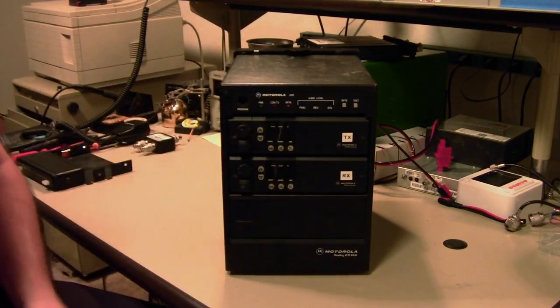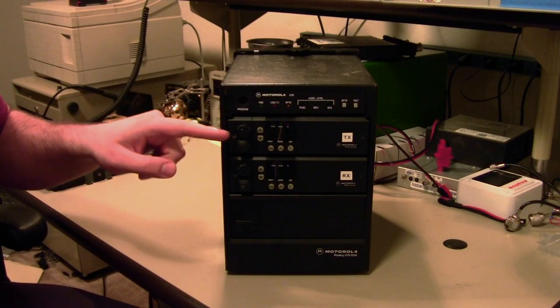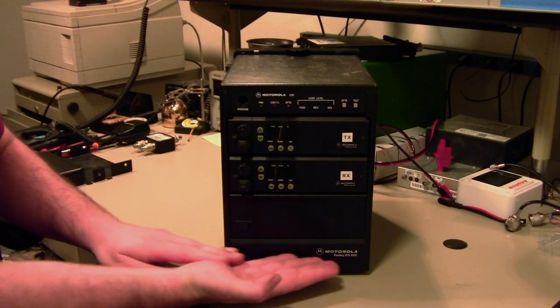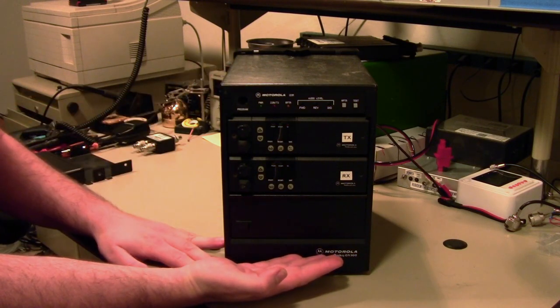So looking at the front, we have again the controller, a transmit radio, a receive radio, a power supply, and then in the bottom slot is the duplexer. So you have the whole stack right here.